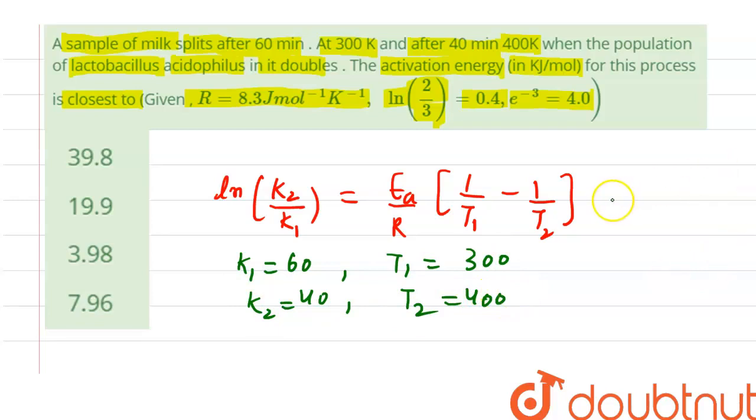Substitute all these values in this equation. k1 and k2 are rate constants, T1 and T2 are absolute temperatures. Substitute values.